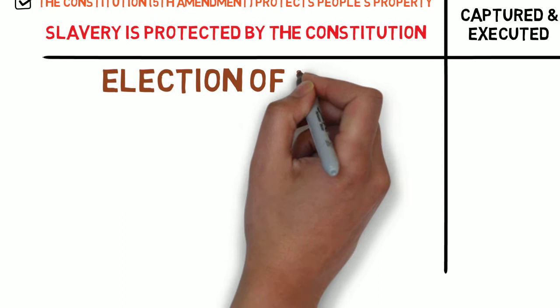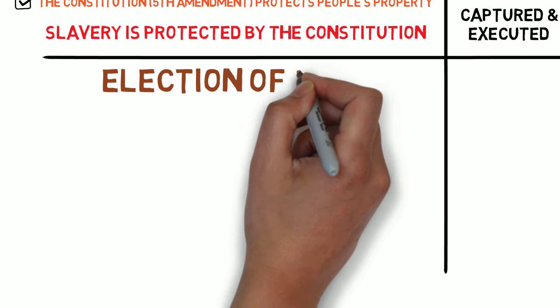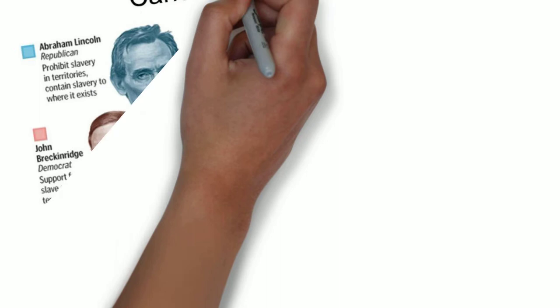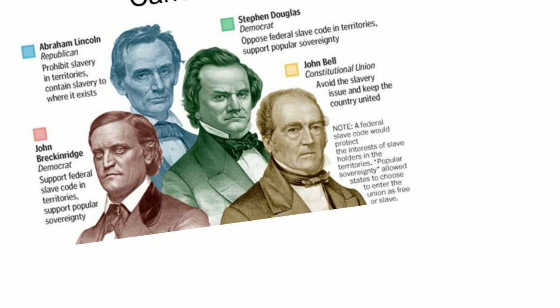The straw that broke the camel's back was the presidential election of 1860. During this election, the extension of slavery into Western territories was the major issue. In the years prior to the election, a new political party called the Free Soil Party emerged. Like their name would suggest, the Free Soilers were opposed to the spread of slavery. Members of the Free Soil Party eventually formed the new Republican Party, which also opposed the spread of slavery. In 1860, they chose as their presidential candidate Abraham Lincoln.